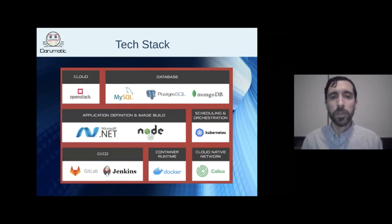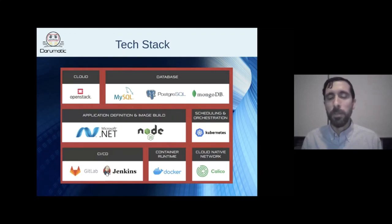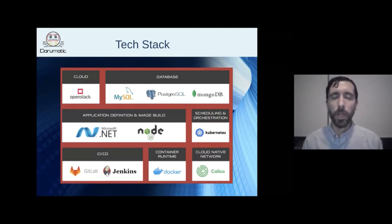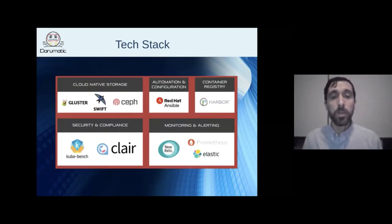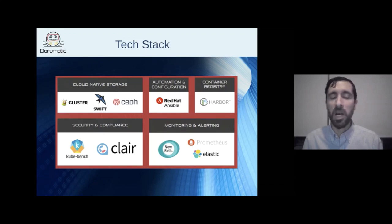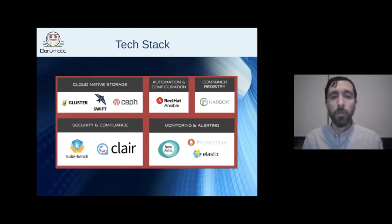To briefly show the technology stack: OpenStack as the cloud on their own data center, MySQL, PostgreSQL, and MongoDB databases, .NET mainly with some Node.js for application development, Kubernetes for orchestration, GitLab for source code and some CI/CD, Jenkins primarily, and Calico for networking. For storage, Swift — an OpenStack technology similar to S3 — is great for objects and backups, and GlusterFS works well for multi-read/multi-write workloads requiring persistence.